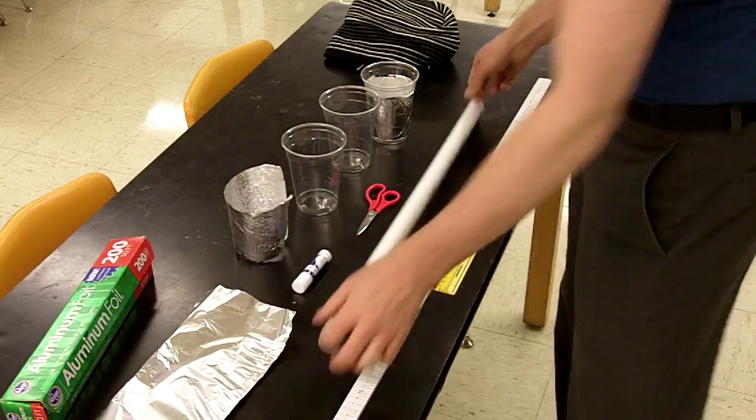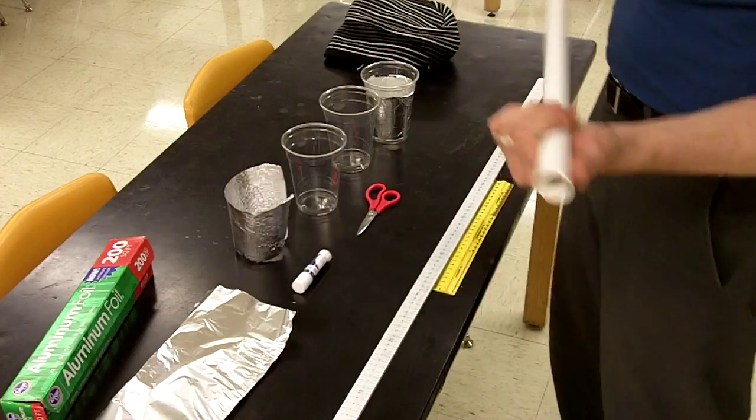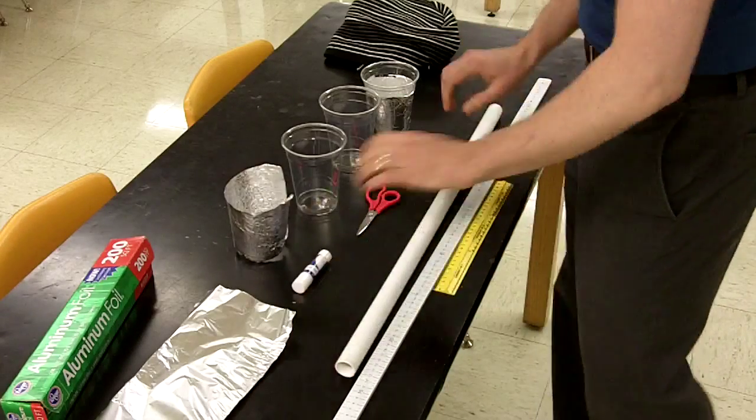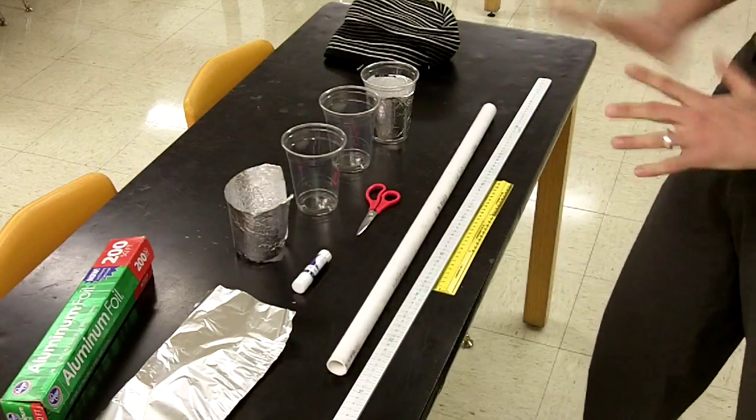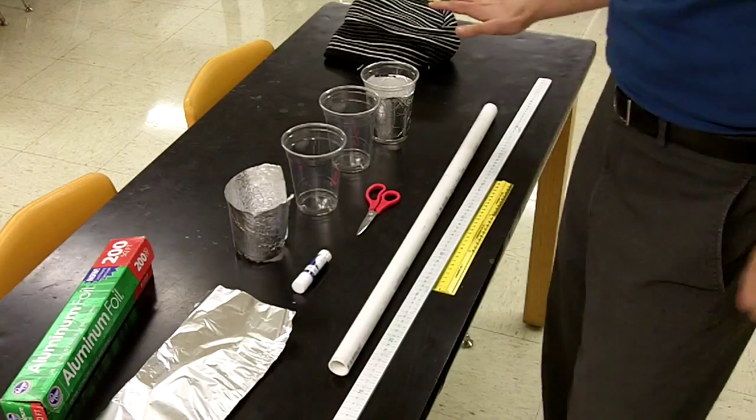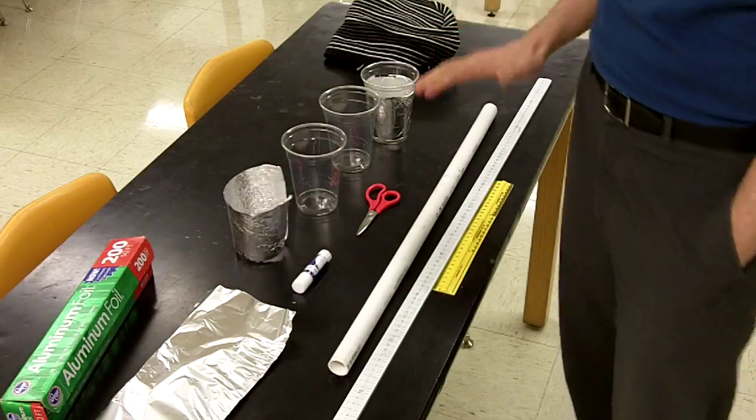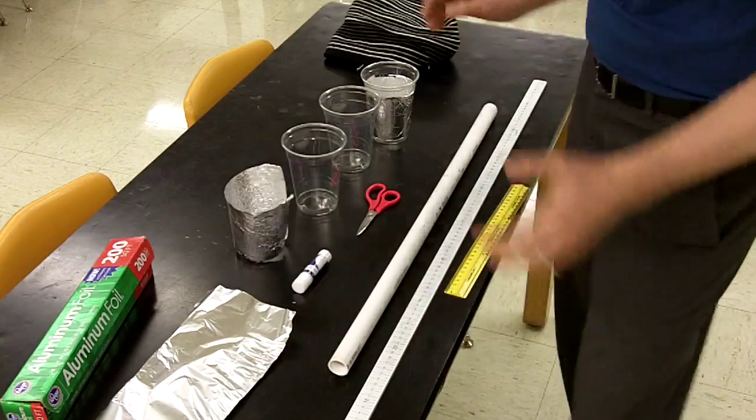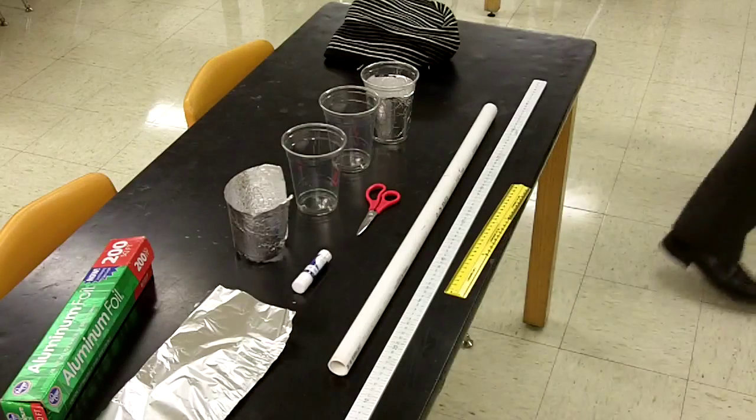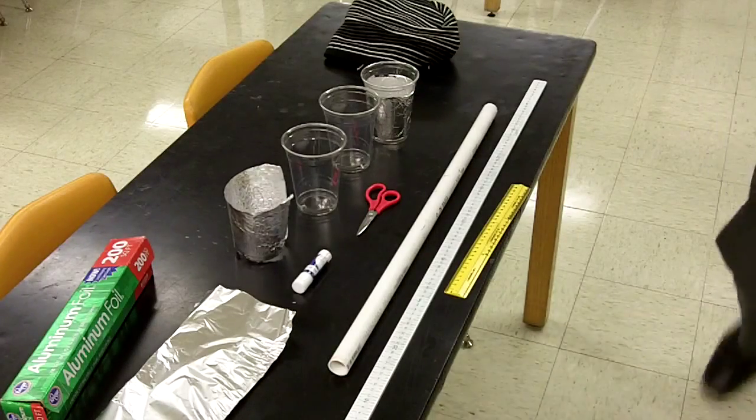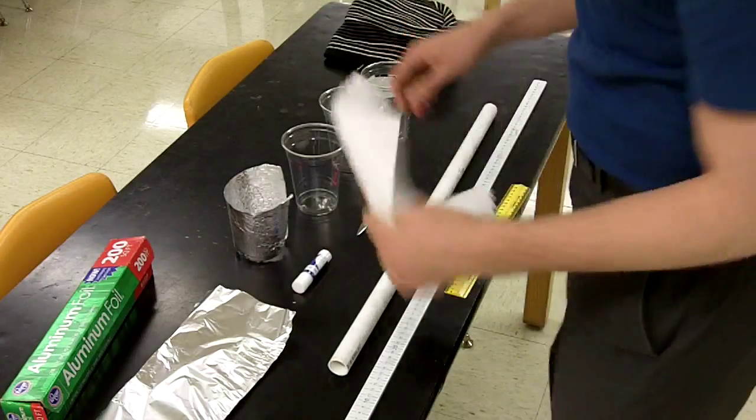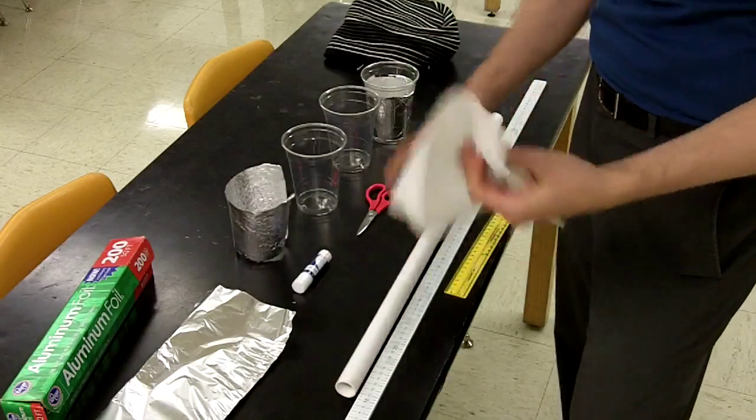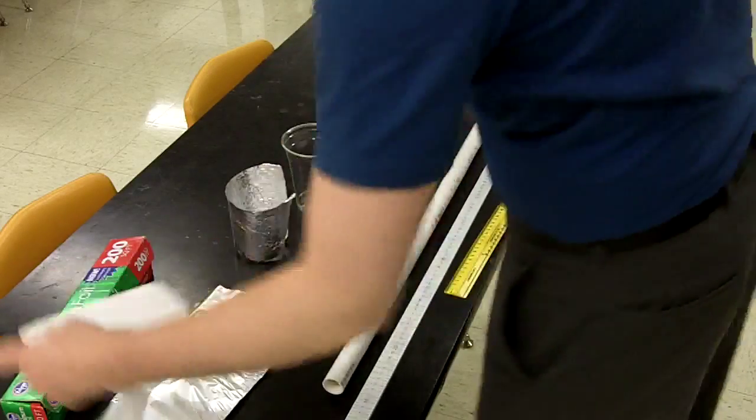You also need an insulated rod. PVC is one of the best ones of these, just PVC tubing from the hardware store, but because that might not be something that people have ready access to, whereas all the rest of these are things you might expect to find in your home, a plastic ruler might also work.